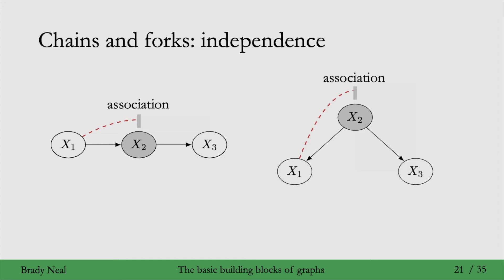Okay, so the term that I've been using here is blocked path, and that's a very important term that we'll be using throughout this course. Similarly, when a path is not blocked, so when we don't condition on x2 in these graphs, then we have an unblocked path. This is when association is free to flow between x1 and x3. So in a blocked path, association is not free to flow, it is blocked.